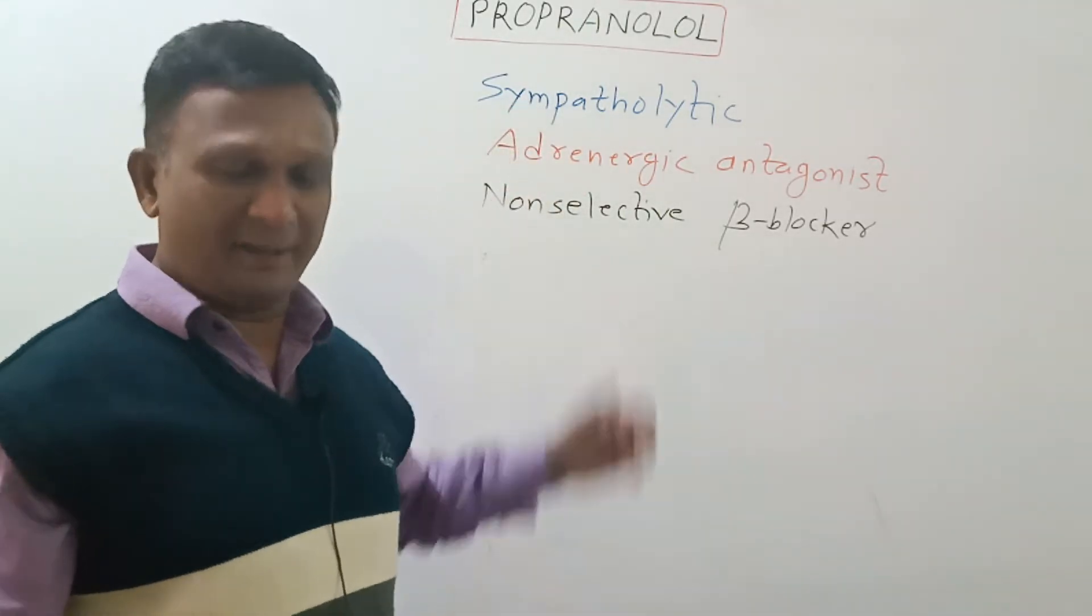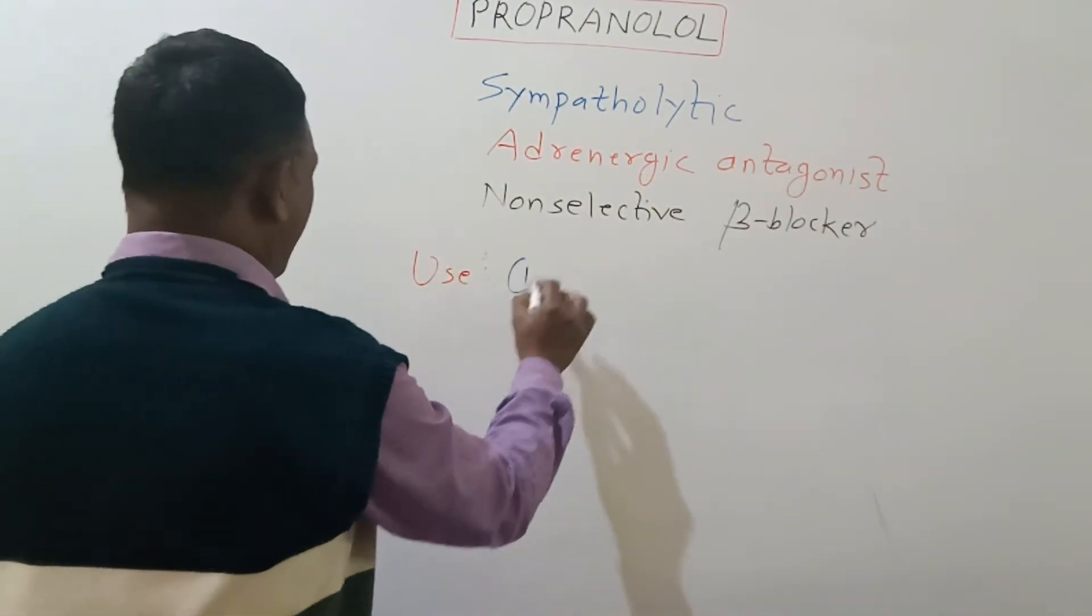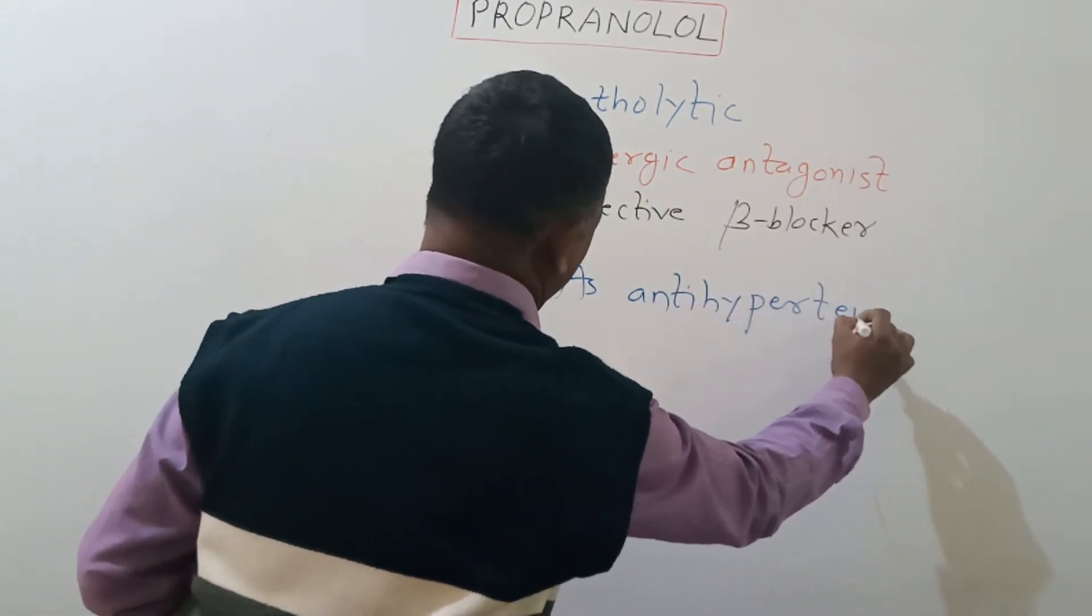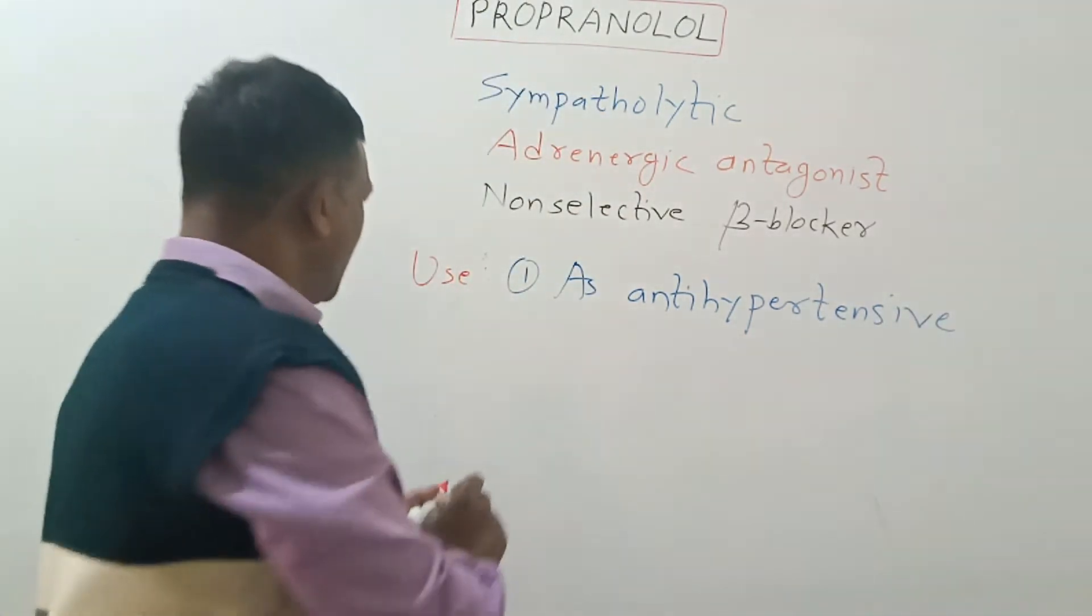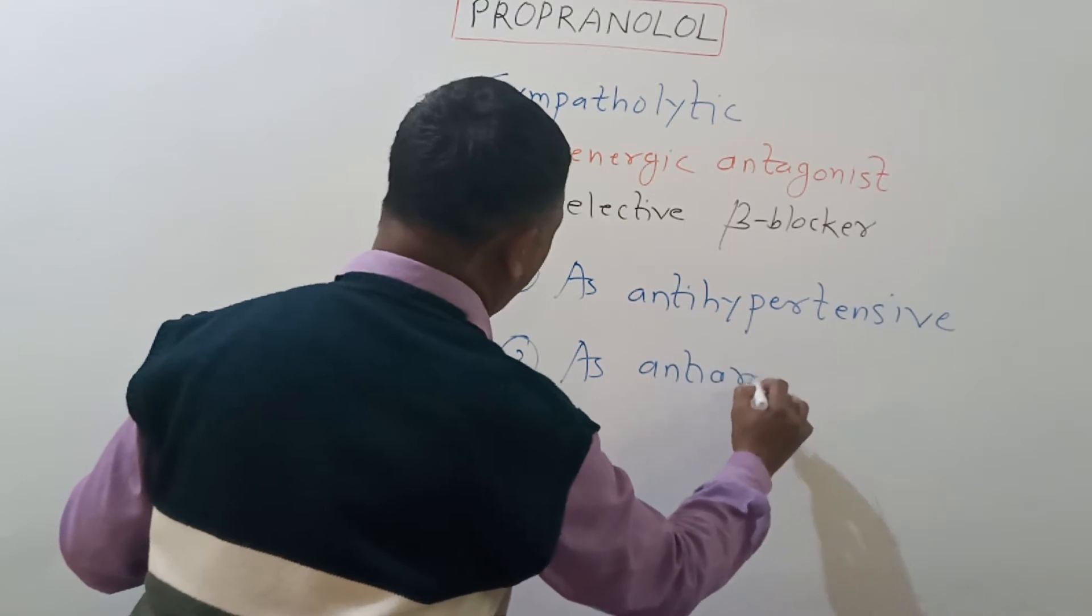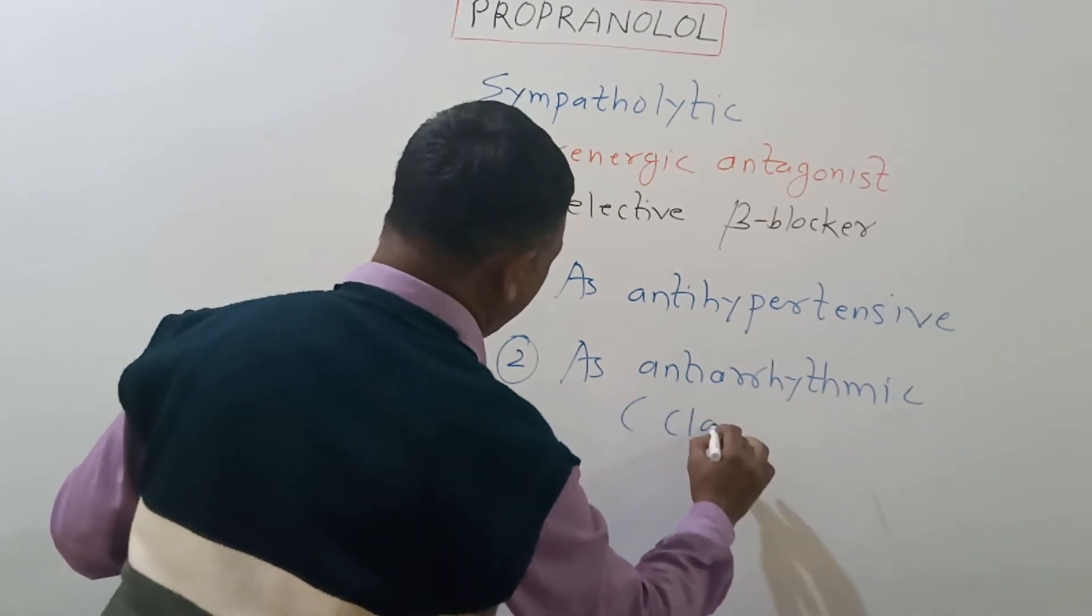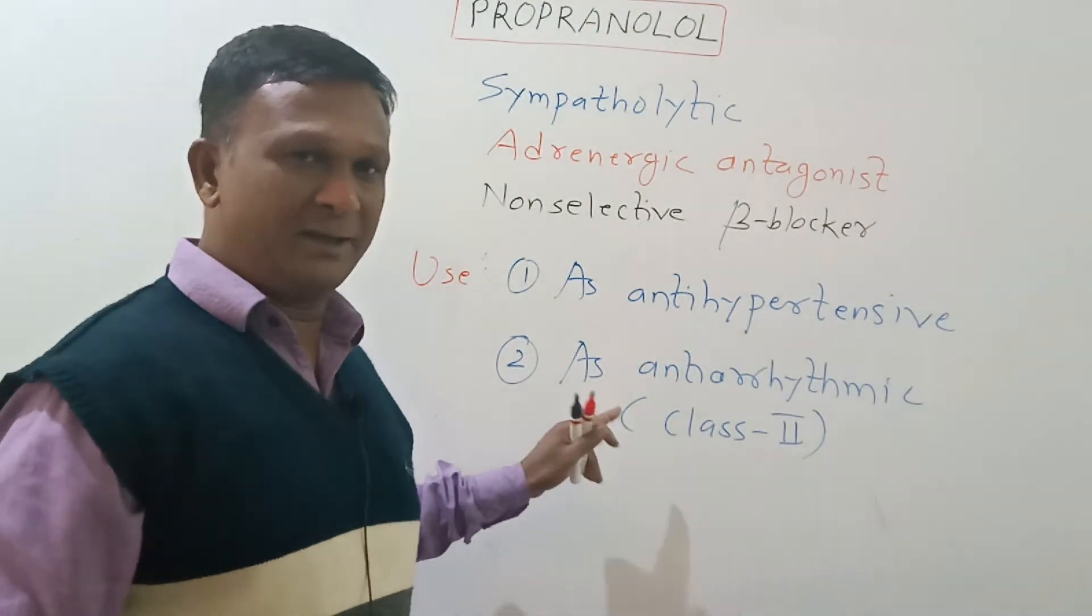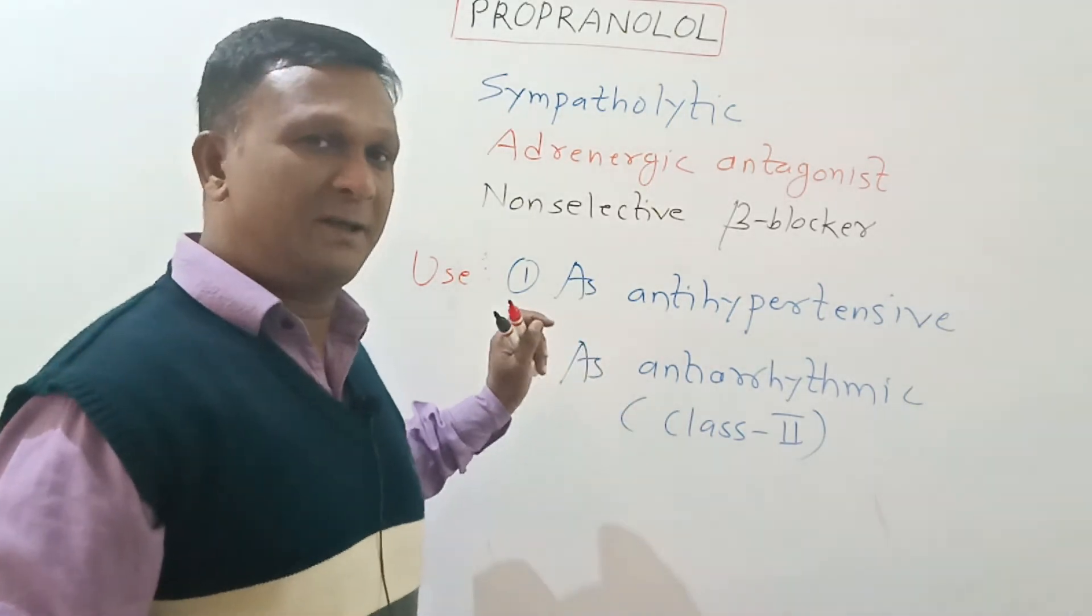Propranolol finds its use as antihypertensive drug for treatment of hypertension. It is also used as antiarrhythmic drug where it is placed in class 2. So this drug also finds its use as antiarrhythmic for treatment of tachyarrhythmia.